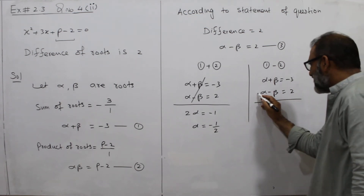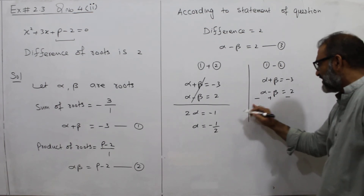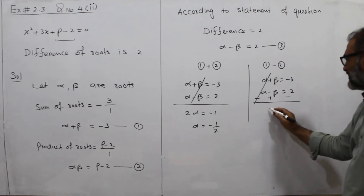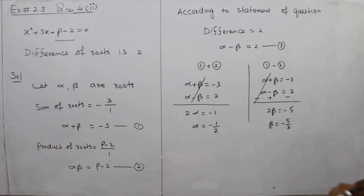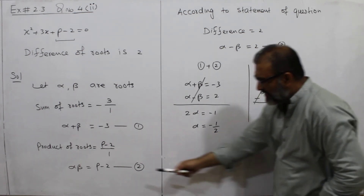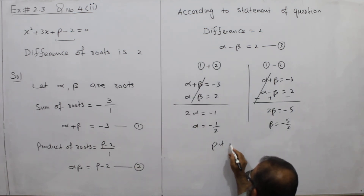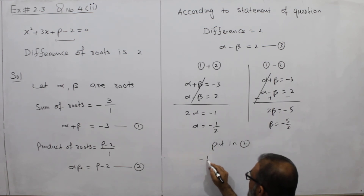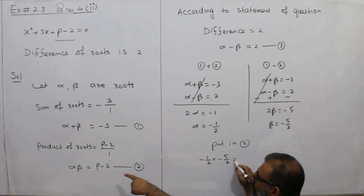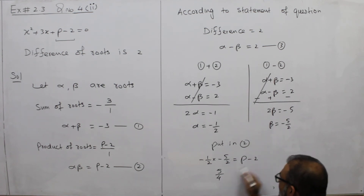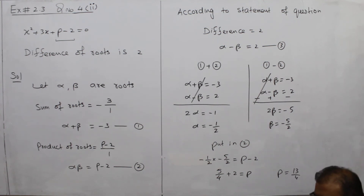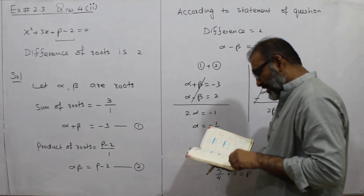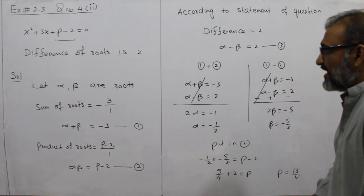When we subtract, all the signs change. Alpha cancels, giving 2 beta equals minus 5, so beta equals minus 5 by 2. Now putting these values into equation 2: alpha equals minus 1 by 2 and beta equals minus 5 by 2, giving alpha times beta equal to 2p. Then 4 times 2 is 8, plus 5 is 13, so 13 by 4 is our answer. Question number 4, part 2 is complete and the answer is correct.